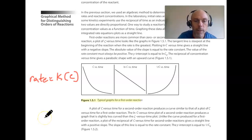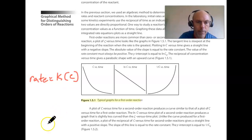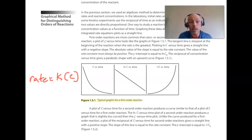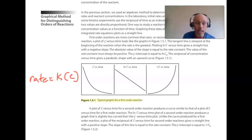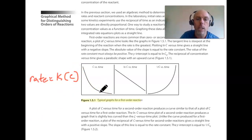We're looking at Figure 1.5.1, which shows three graphs typical for a first order reaction. For a first order reactant, there's an exponent of one with the concentration, meaning the relationship between concentration and rate is linear. As the reaction proceeds and there's less and less reactant, the rate goes down, and the consumption of that reactant goes down as well, which is what we're seeing in this graph. A first order reaction will have a non-linear concentration versus time graph.